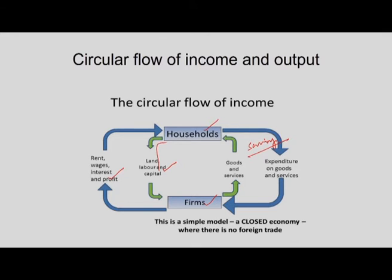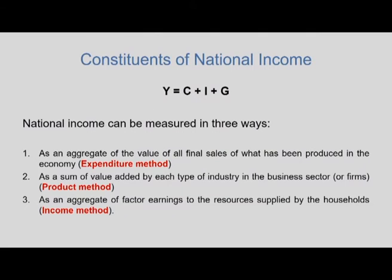Part of household incomes go into savings and part into expenditure on goods and services. Firms for investment purposes plow back some savings and also obtain household savings funneled through the money market. In this model economy, only two types of goods are produced — consumption and investment goods — and some may be purchased and distributed by the government. National output, generally referred to as Y, has three components: consumption goods, investment goods, and goods purchased or distributed by the government.